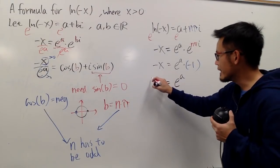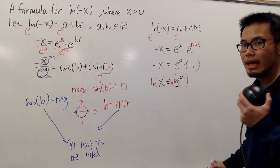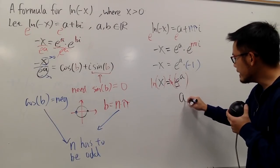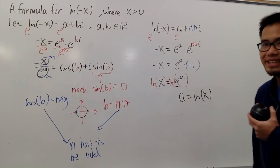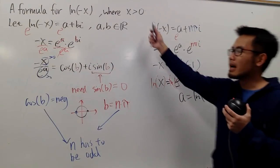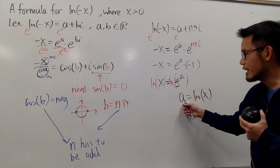So, what we can do is, we can now take the ln both sides, so that this and that will cancel, and that means we have a is equal to ln of positive x. And notice, x is a positive real number, so you know this right here is a real number. And we are done, because we got the a, we also got the b.